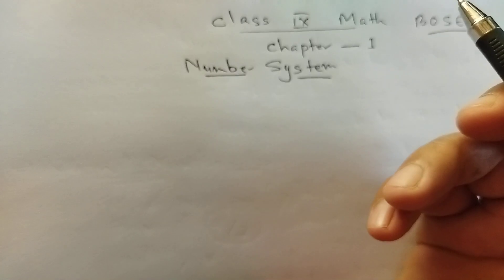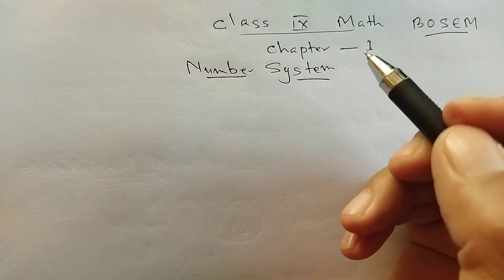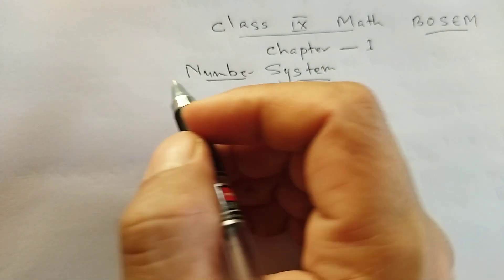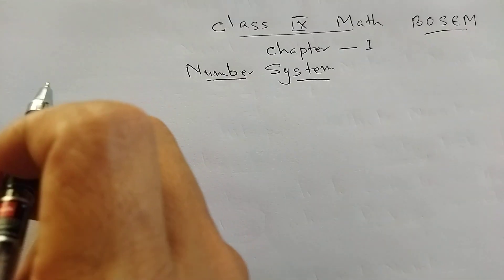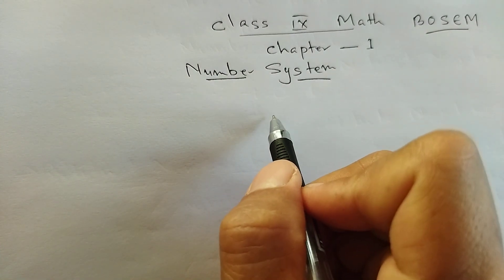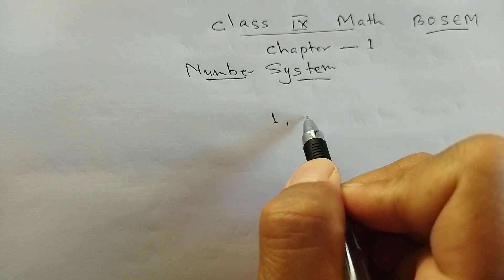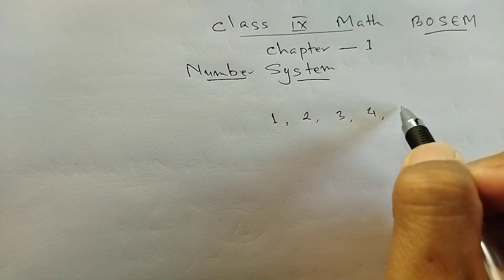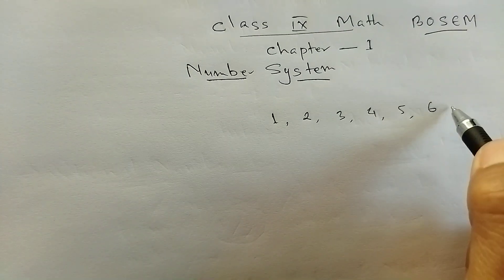Number System is part of the number. If you want to count: 1, 2, 3, 4, 5, 6.